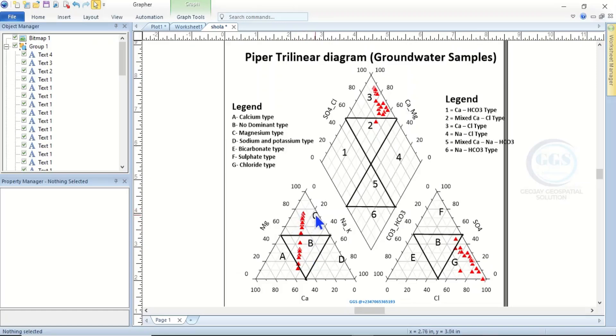C is magnesium-rich. You can see that magnesium is at 100 here, 80, 60, as it's decreasing. But samples that fall within this region labeled C, they are magnesium-rich.